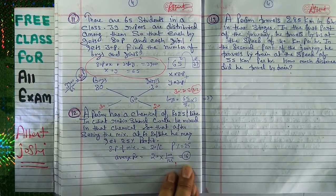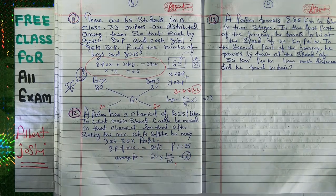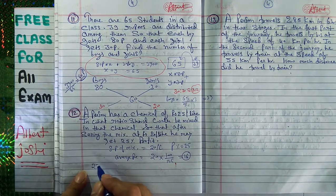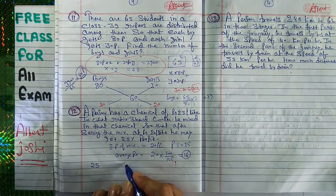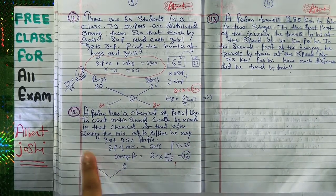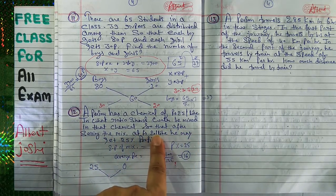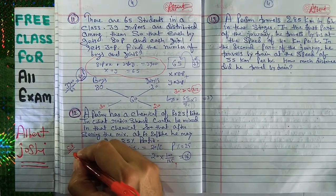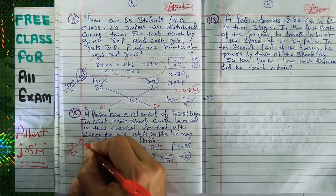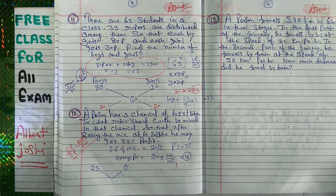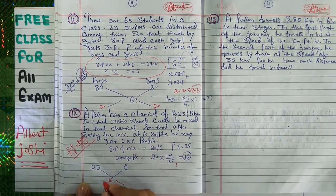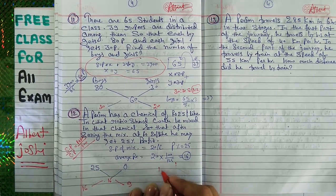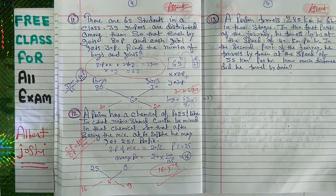The average price, that is the mean value, is 16 rupees. The chemical costs 25 and water costs 0. Using the allegation method: 25 minus 16 equals 9, and 16 minus 0 equals 16. So the ratio of chemical to water is 16:9. That is your answer.